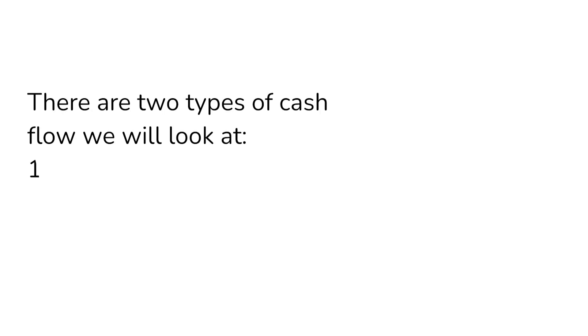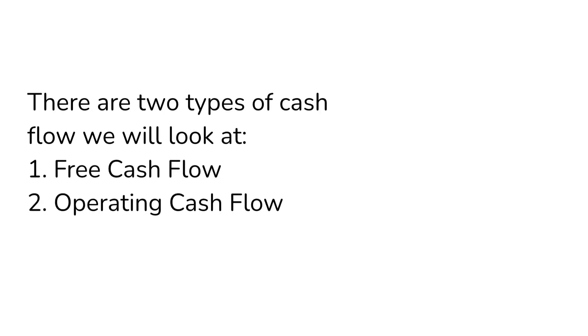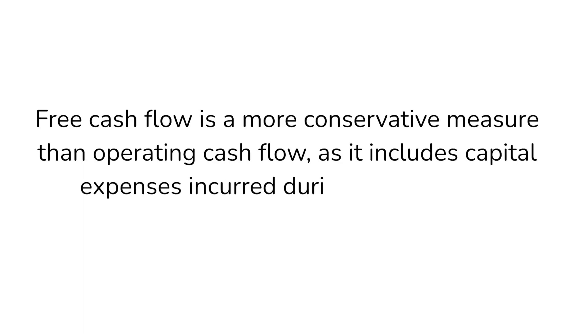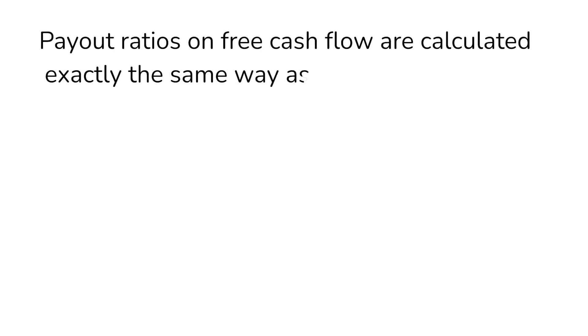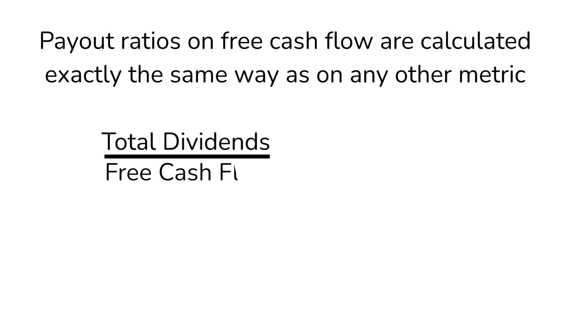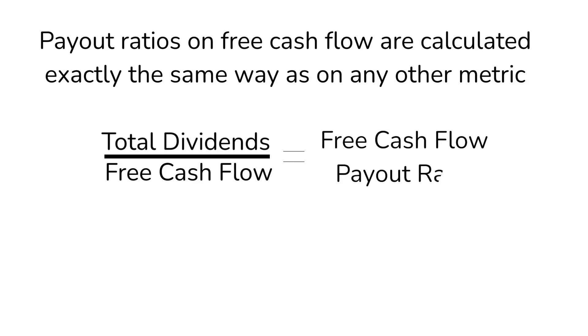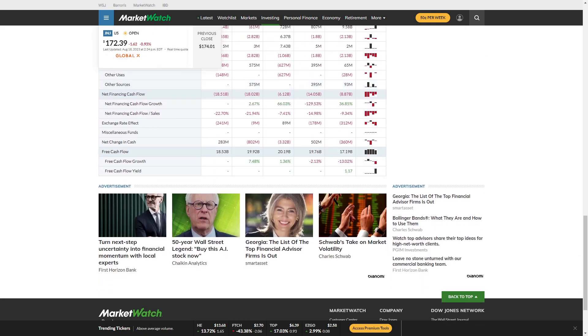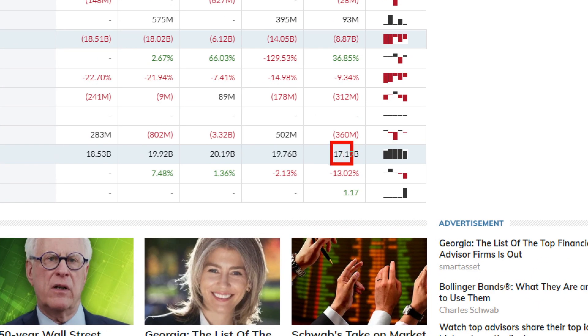There are two types of cash flow we will look at: free cash flow and operating cash flow. Free cash flow is a more conservative measure than operating cash flow as it includes capital expenses incurred during a given year. Payout ratios on free cash flow are calculated exactly the same way as any other income metric — simply divide the total dividend paid by the total free cash flow for a given year. Going back to our J&J example, J&J paid $11.68 billion in dividends and declared $17.19 billion in free cash flow in 2022. $11.68 billion divided by $17.19 billion gives us a free cash flow payout ratio of 67.9%.